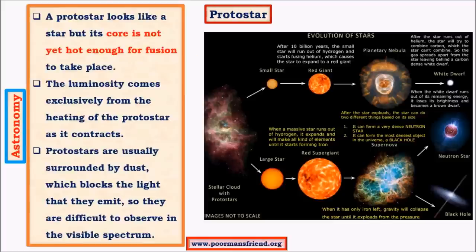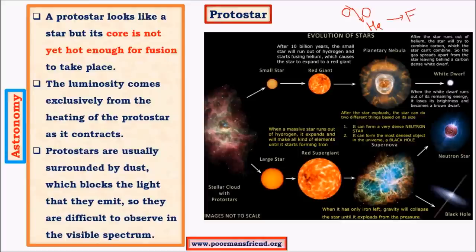In the next stage, called protostar, it is an intermediate state between the main sequence star and the nebula. At this stage the coalescing matter forms into a huge mass nearly equal to a star, but it doesn't have enough energy to start nuclear fusion. Nuclear fusion is a process in which two atoms of hydrogen combine to give rise to one atom of helium, releasing a huge amount of energy. Nuclear fusion results in a huge release of energy, and this energy is important in driving a star.